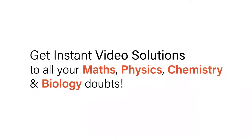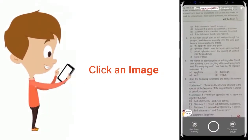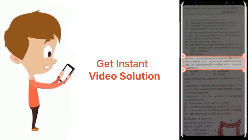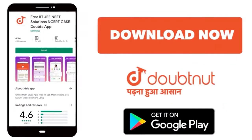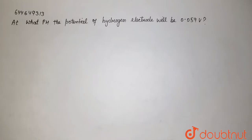With Doubtnut, get instant video solutions to all your math, physics, chemistry, and biology doubts. Just click the image of the question, crop it, and get instant video solutions. Download Doubtnut app today. The question is: At what pH the potential of hydrogen electrode will be 0.059V?